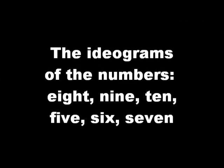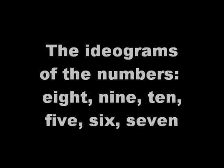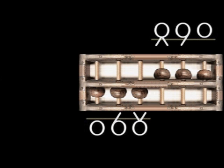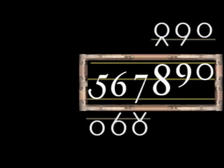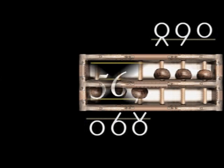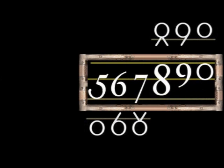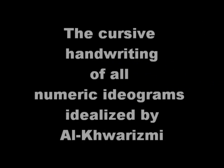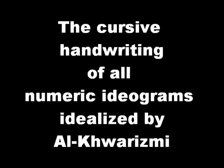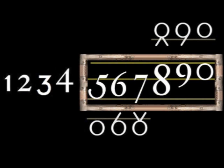The ideograms of the numbers 8, 9, 10, 5, 6, 7. The cursive handwriting of all numeric ideograms idealized by Al-Khwarizmi. The contrast marks are the 5. The first clear layer was the 5.